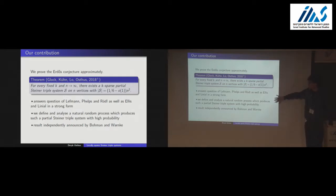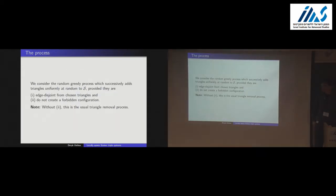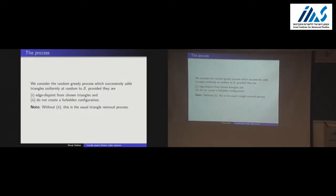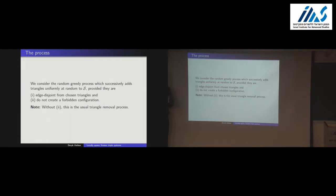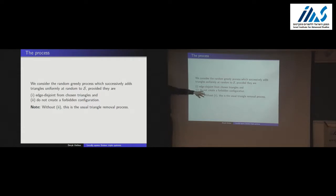Now I'll say something more about the proof. We start with an empty system, then take a random triangle and add it, then keep adding random triangles as long as they're edge-disjoint from the current set — this keeps it as a partial Steiner system — and we do not create a forbidden configuration. So if K equals 4, we don't add a triangle if it creates a Pasch configuration.